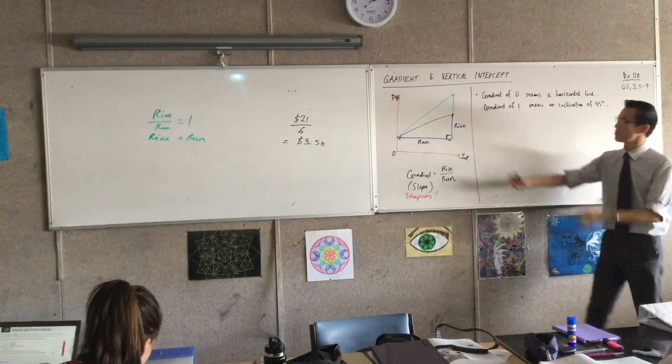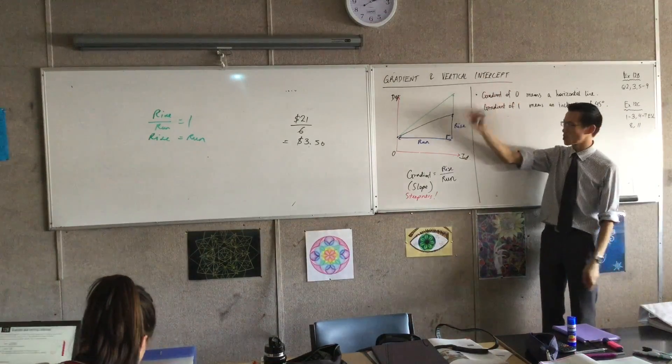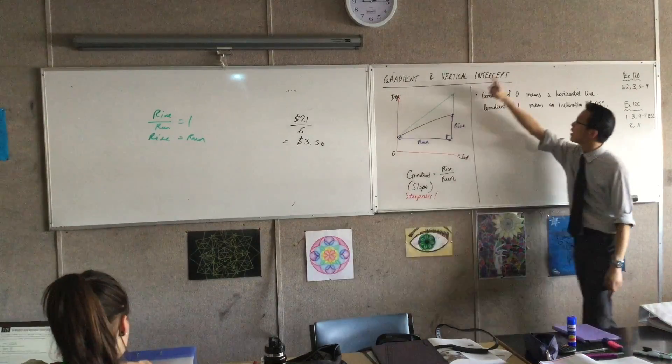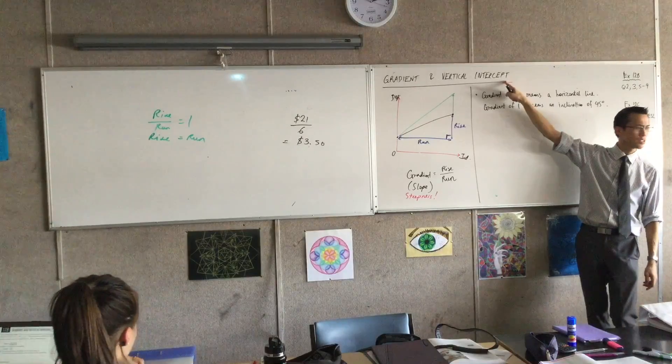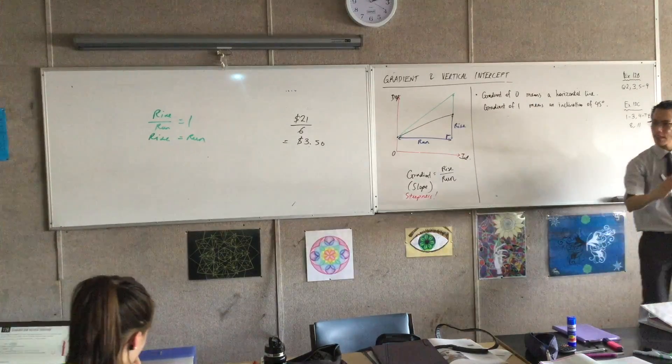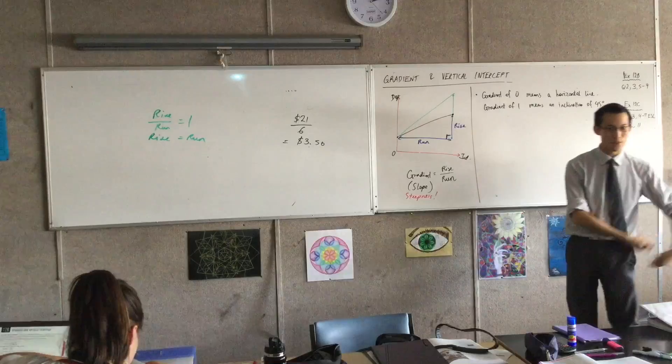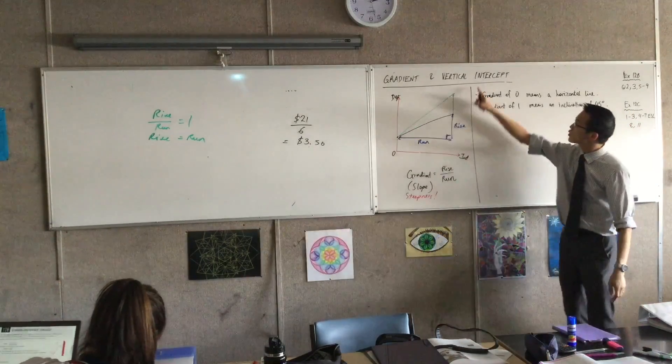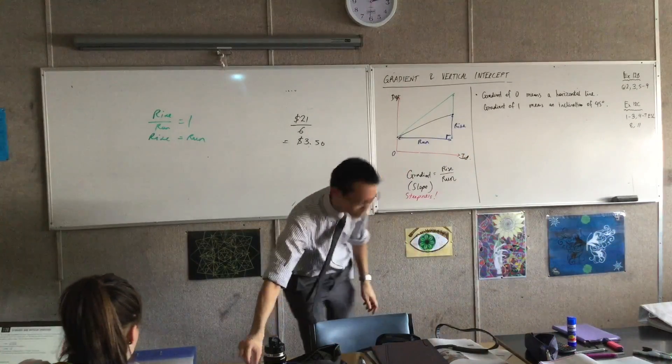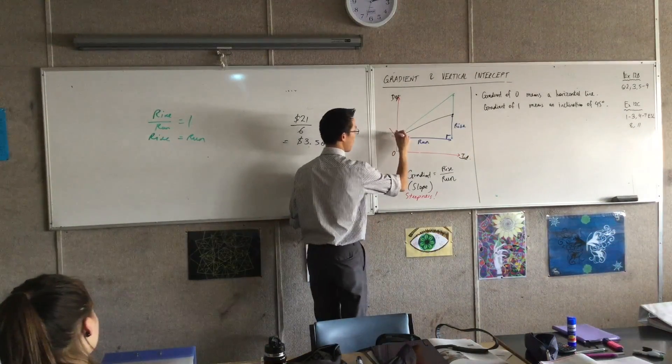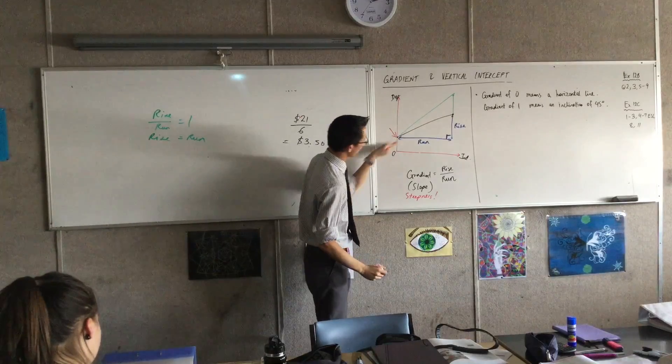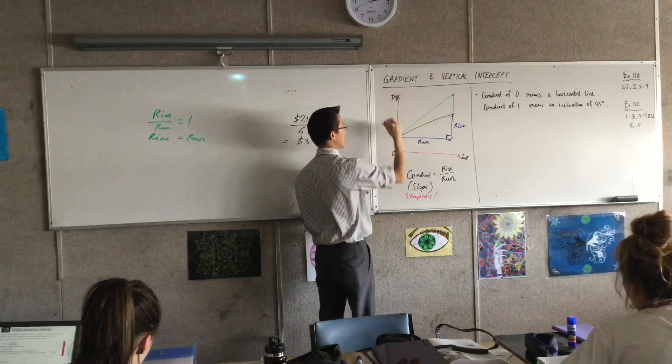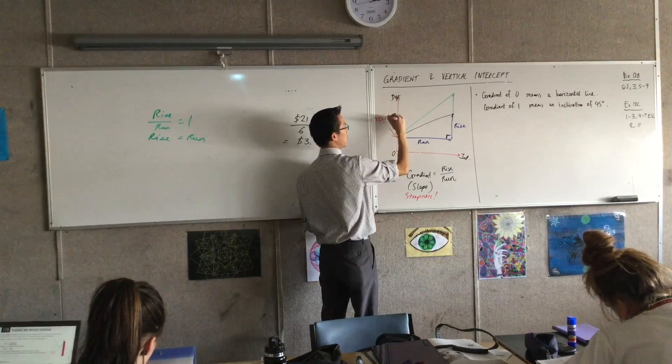I'm going to briefly describe the vertical intercept, because I think it's almost on the diagram. Vertical, we're talking about this axis over here. Intercept. What does intercept mean? It's where two things cut or meet, right? Which is why when you play touch and someone intercepts the ball, it's because they and the ball are the same place at the same time. So the vertical intercept is this spot over here. It's where the graph intercepts with the vertical axis.